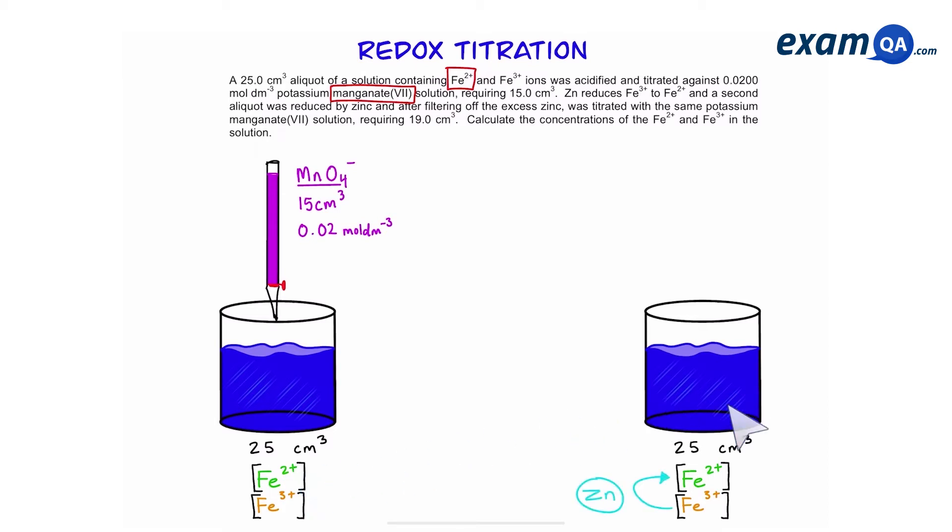In the second beaker, we first add zinc, and zinc converts all of the 3 plus back into 2 plus. As expected, we end up using more manganate this time. The reason behind that is because we've now got extra 2 plus, which has all come from the 3 plus.